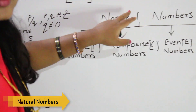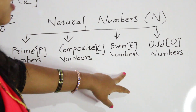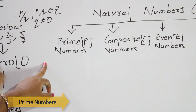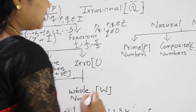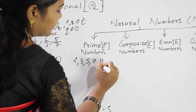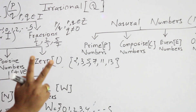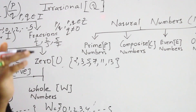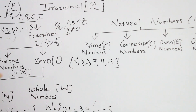Next, natural numbers are of 4 types: prime numbers, composite numbers, even numbers, and odd numbers. What are prime numbers? A number which has only 2 factors — that is 1 and itself — is known as a prime number. Examples: 2, 3, 5, 7, 11, 13. These are prime numbers — numbers which appear in only 2 tables, that is the 1 table and their own table.